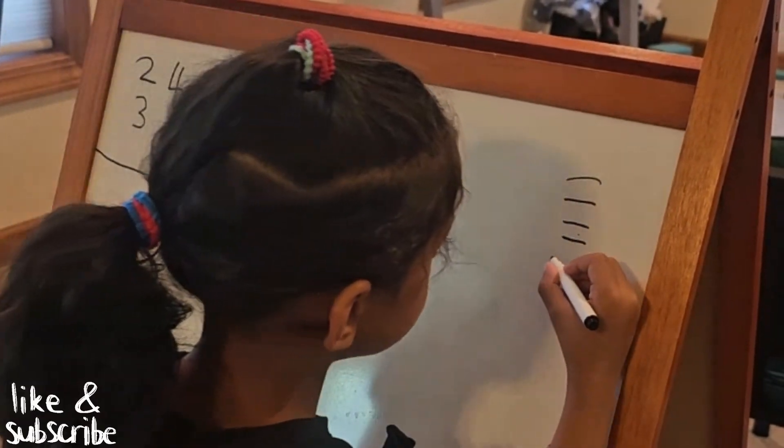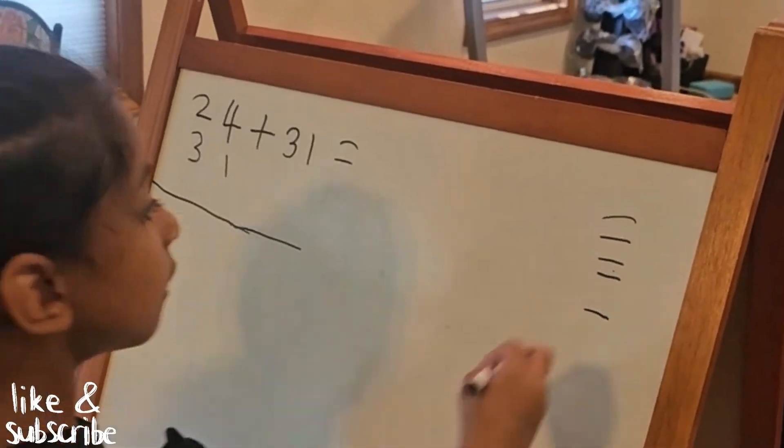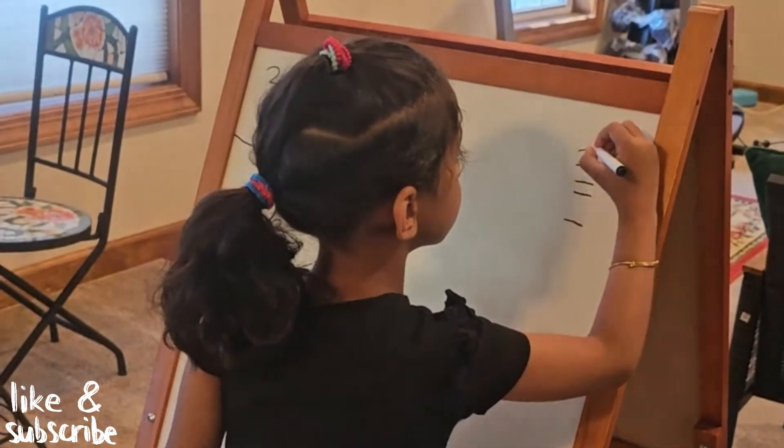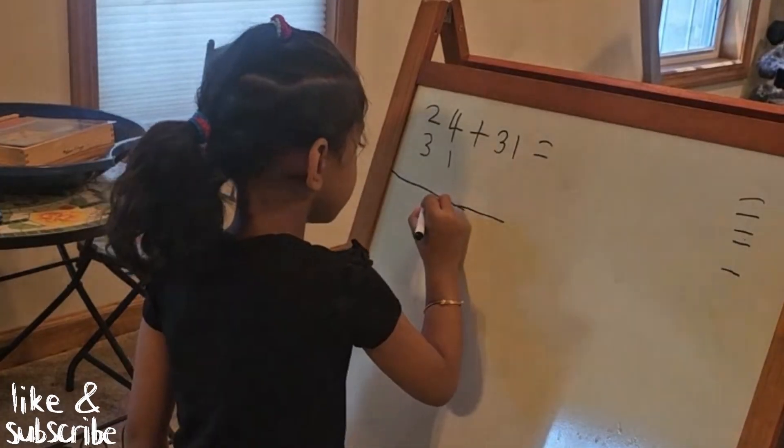Then we draw one over here. And then we count them all together. One, two, three, four, five. Okay.